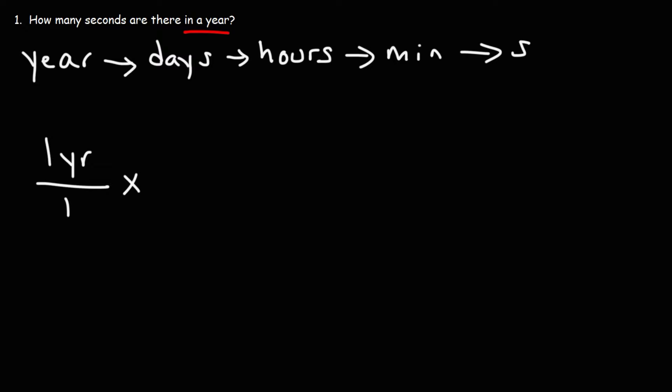What is the conversion factor that's going to take us from years to days? We know on average there are 365 days per year, except if you're dealing with a leap year, which has 366. If you average it, it's 365.25. But for problems like this, if you put 365 days, you'll be okay.